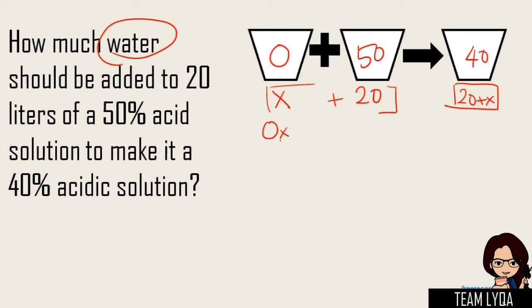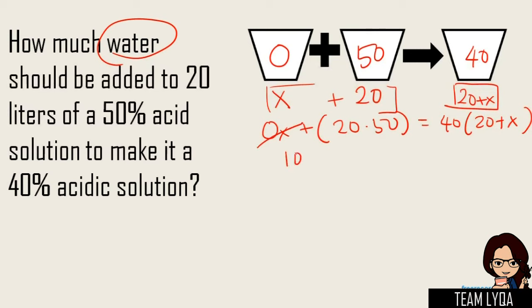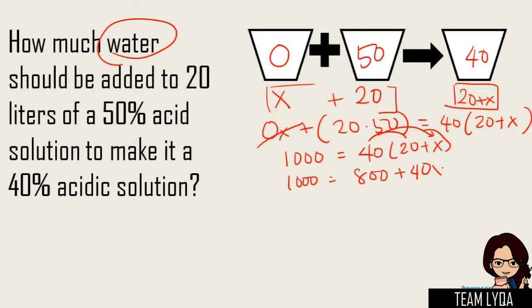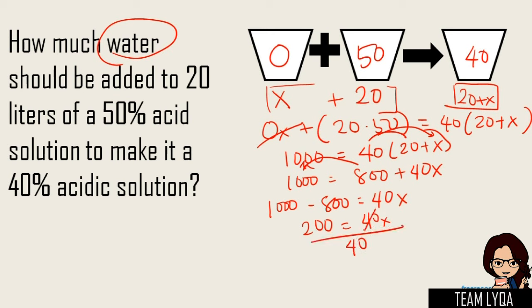So this would be: 0(x) + 20 × 50 = 40 × (20 + x). Then solve down — this would be 0, so 1,000 = 40 × (20 + x). Ididistribute lang natin yung 40 doon, so we have 1,000 = 800 + 40x. Ililipat natin yung 800 doon, magiging minus — so 1,000 − 800 = 40x, which is 200 = 40x. Didivide mo both sides by 40 para makancel yan, so what you have is 5 liters. So that is the answer — you need 5 liters of water to make it 40%.